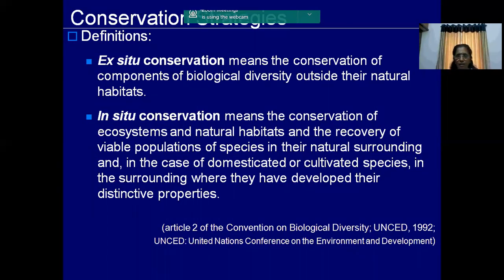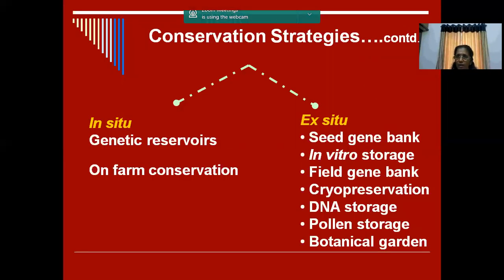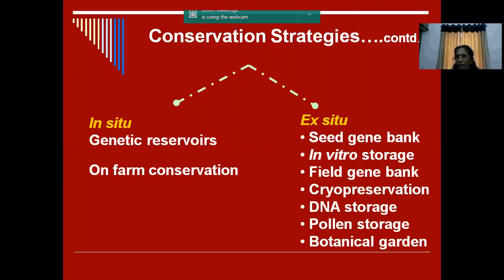Now conservation strategies - what are they? We have basically two different types of conservation: ex-situ conservation and in-situ conservation. What is ex-situ conservation? It is conserving outside the area. Suppose we have a crop that has its center of diversity in a particular forest area - black pepper, for example, which is predominant in the forest area. We bring it and grow it in our institute. Suppose any seed crop - we bring the seed and conserve it in the seed gene bank. That is ex-situ conservation.